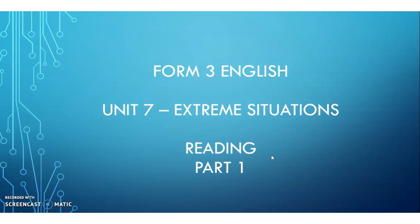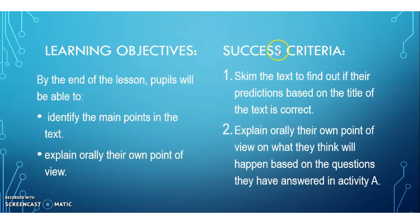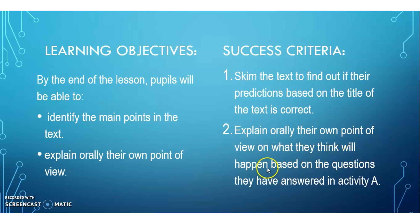Before we start the lesson, let's go through the learning objectives and success criteria. By the end of the lesson you will be able to identify the main points in the text and explain orally your own point of view. Success criteria: skim the text to check your predictions based on the title, and explain your point of view based on the questions you answered in Activity A.